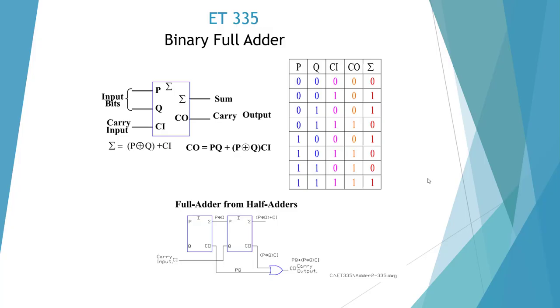Here I'm showing a binary full adder. The difference between a half adder and a full adder is the full adder has a carry input. So it has three inputs: P, Q, and carry input, and two outputs the same as a half adder: sum and carry output.